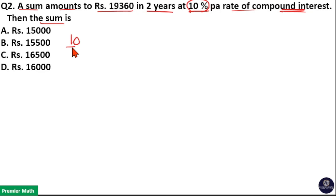10% means 10 by 100, that is 1 by 10. That means here 1 unit is the interest out of this 10 unit principle.